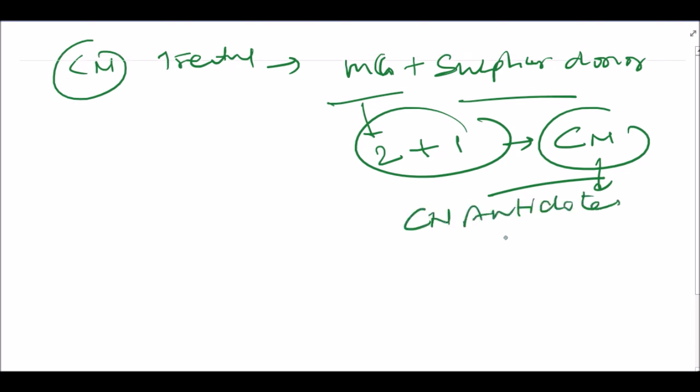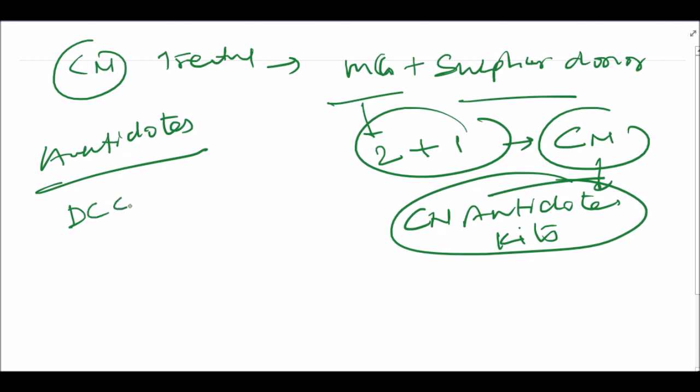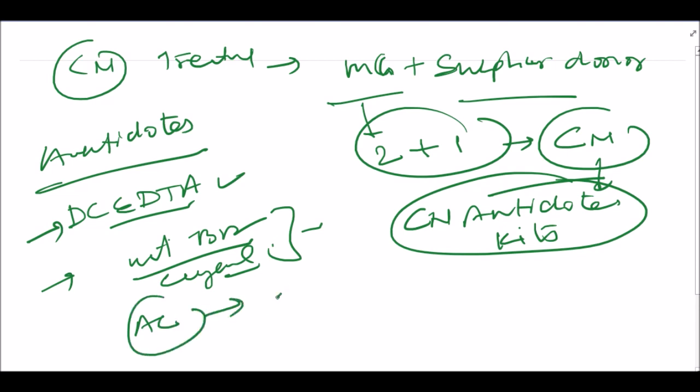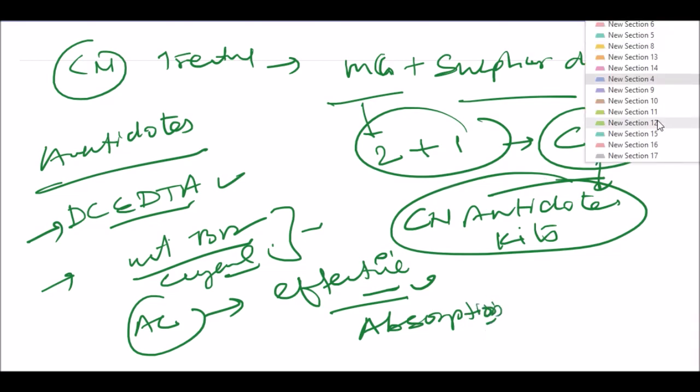Other antidotes that may be useful: dicobalt EDTA is also useful, it is a chelating agent for cyanide. We can give vitamin B12 that forms cyanmethemoglobin by binding with cyanide. Activated charcoal is also effective in cyanide poisoning in some cases by decreasing absorption of cyanide.